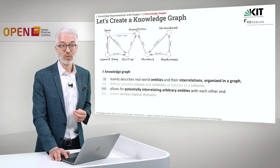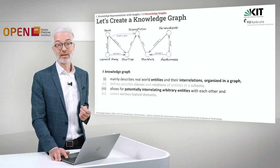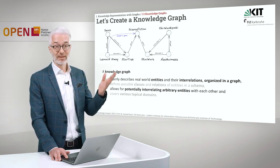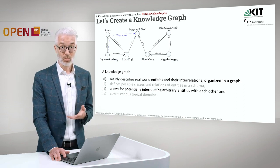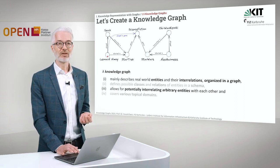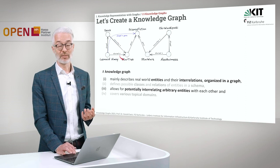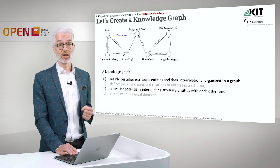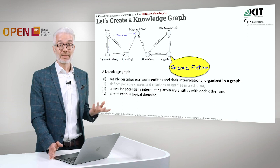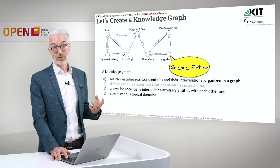Let's go back to our graph and think about how this definition really fits. It describes real-world entities and their interrelations organized in a graph — that fits. It also allows for potentially interrelating arbitrary entities with each other — so we could, for example, connect Leonard Nimoy directly to science fiction with a property named 'plays in genre.' In that way, you could arbitrarily connect each of the nodes interconnected via a path directly with each other. And it covers various topical domains — this one here covers science fiction, and we can do other kinds of graphs as well.